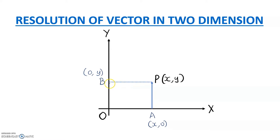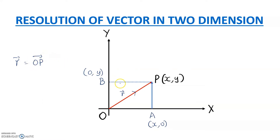Now I'm going to introduce a new vector OP. This is a vector from the origin O, and I can define this as vector R, where vector R is equal to OP. I can define vector B as from O to B, and vector O to A as vector A.